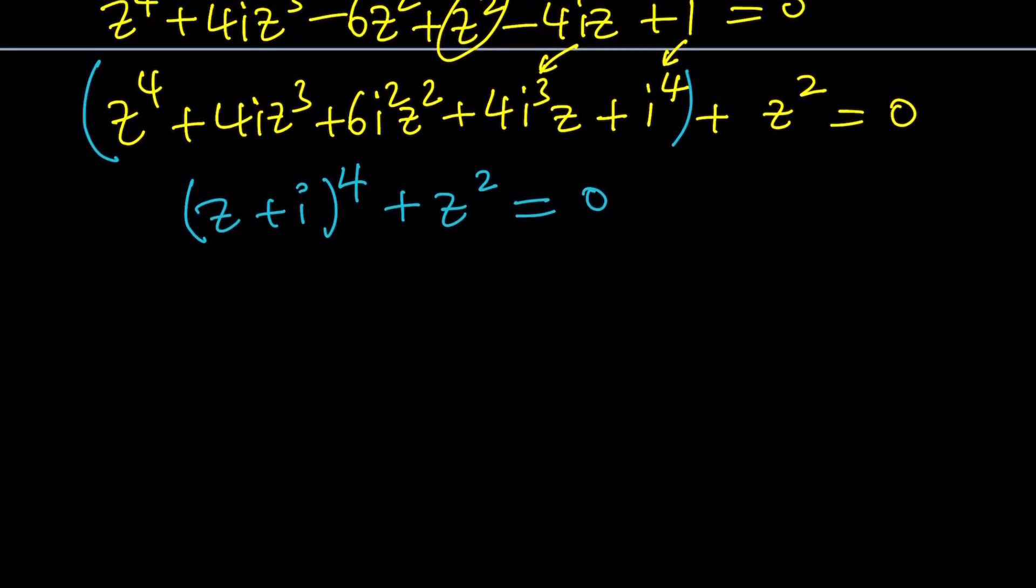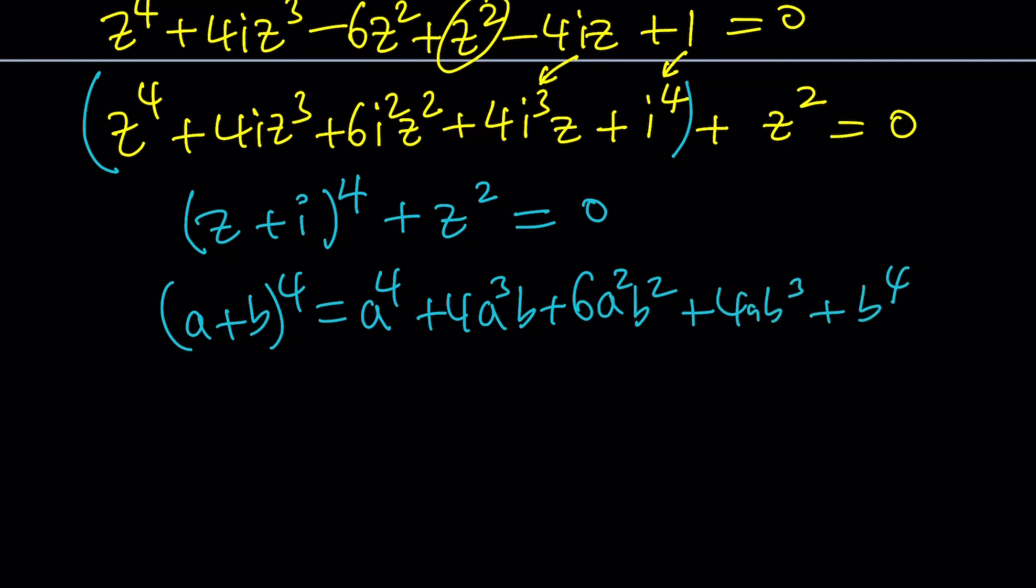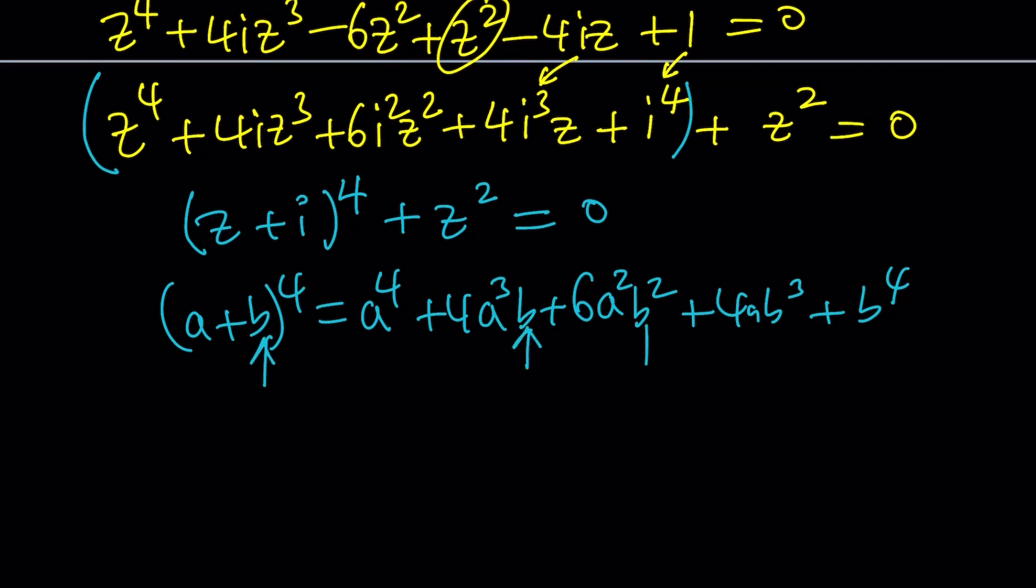In other words, I'm talking about this: if you have a plus b to the fourth power, it's a to the fourth plus 4a cubed b plus 6a squared b squared plus 4ab cubed plus b to the fourth. Notice that this comes from the binomial theorem. The coefficients are 1, 4, 6, 4, 1, except we replace b with i so we can get i here, i squared here, and i cubed here. So this is how it works, and now we have a nice expression.